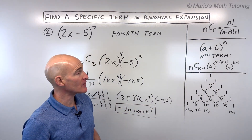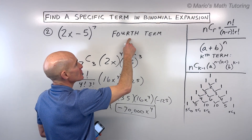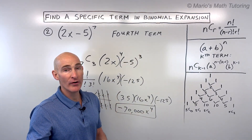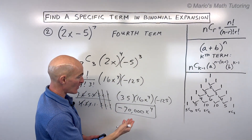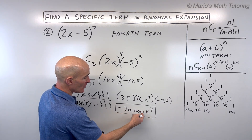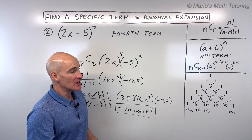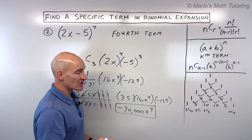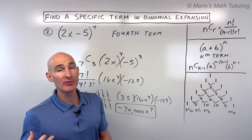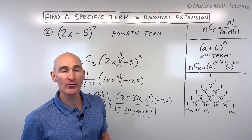Sometimes they'll ask not for the full term but just the coefficient — the number in front of the variable — which would be negative 70,000. That's also a common type of question. Let's do two more examples; see if you can do these on your own.